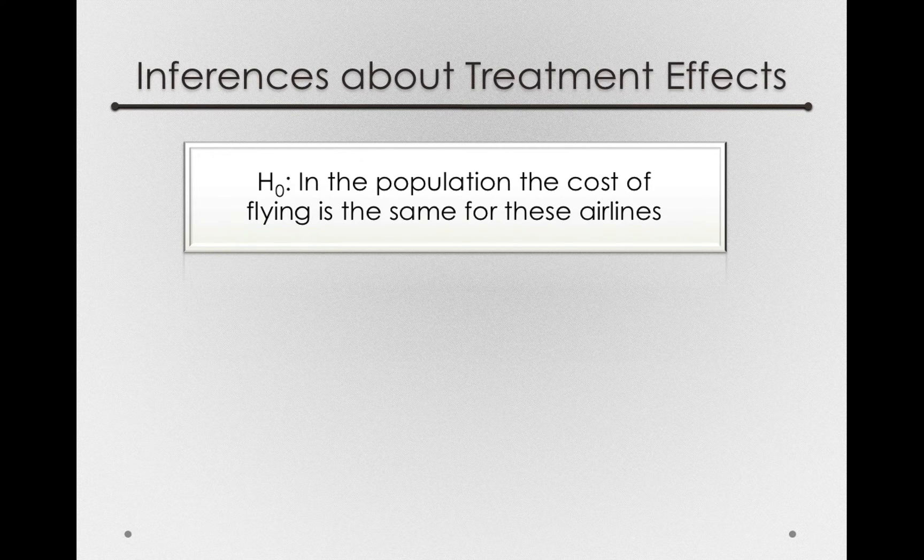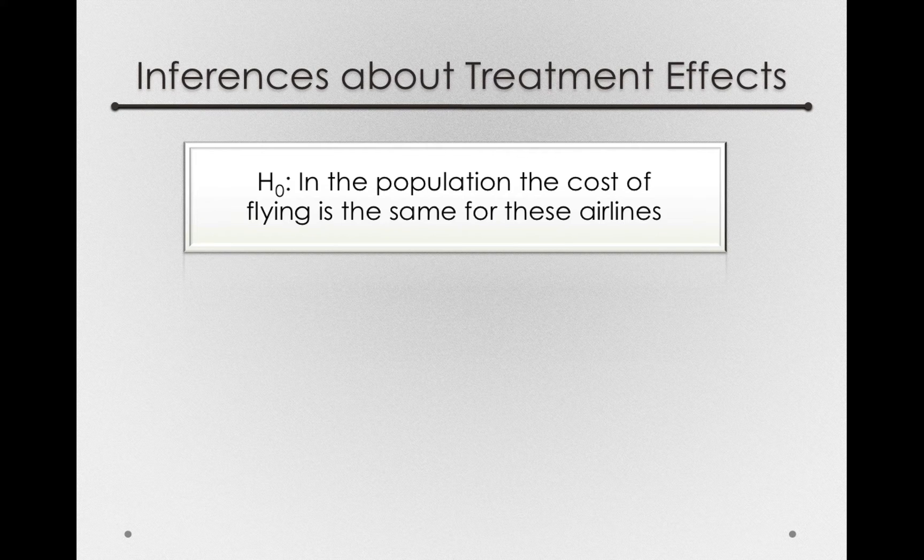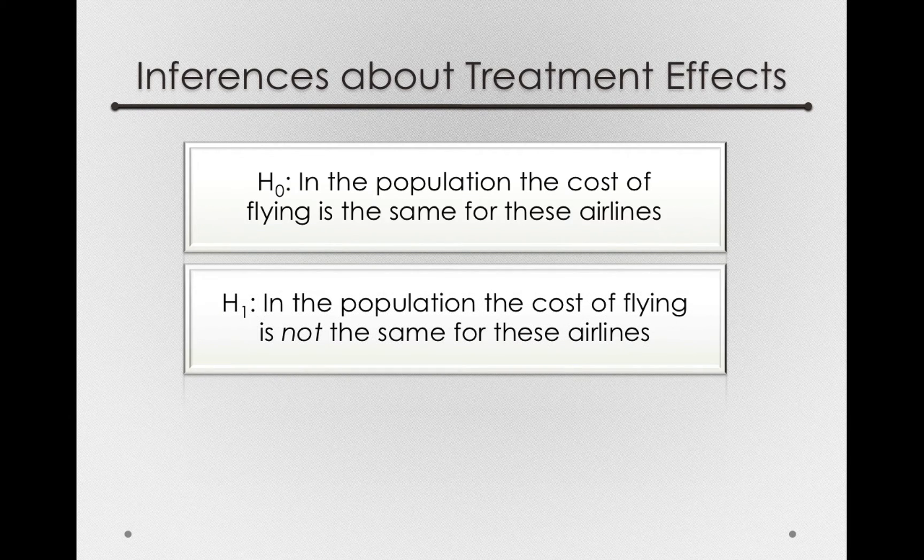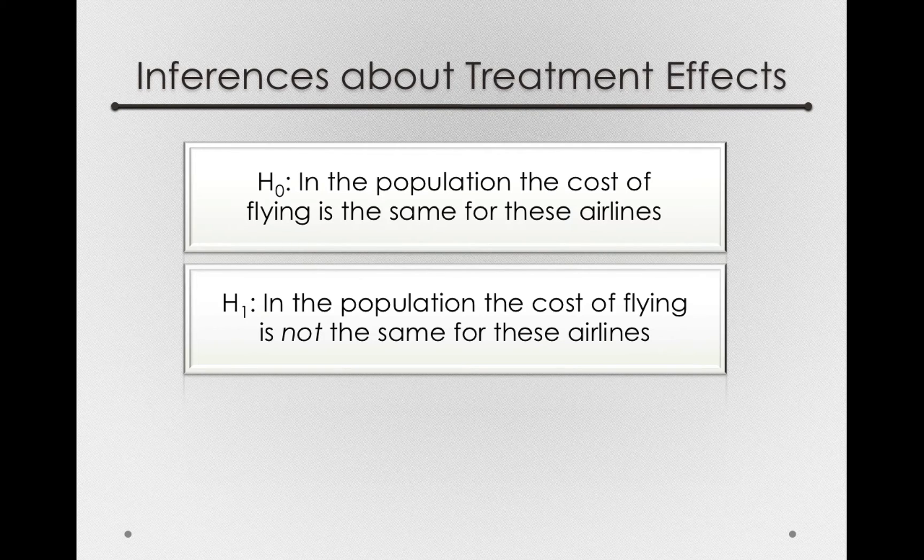That's just like saying those tau sub J's are all the same. There really isn't a difference between the different groups. The alternative hypothesis states that in the population, the cost of flying is not the same for these airlines.